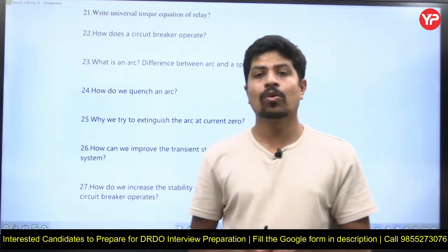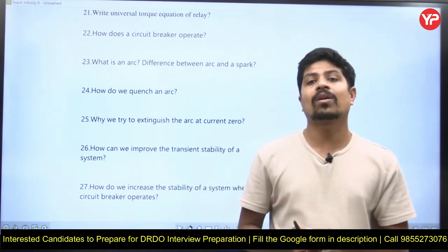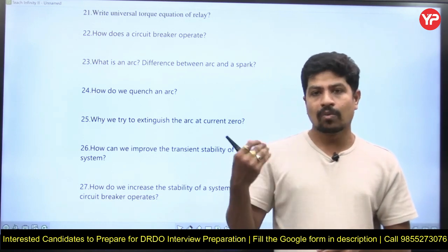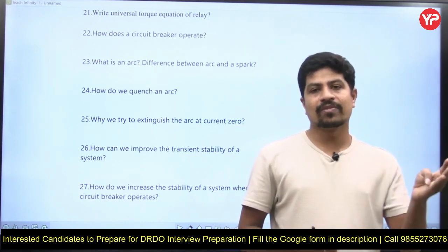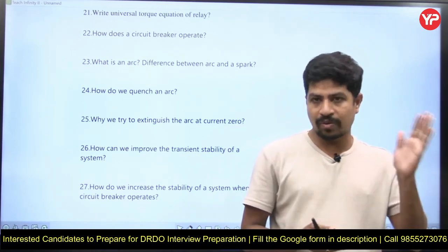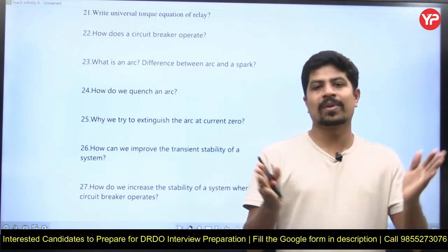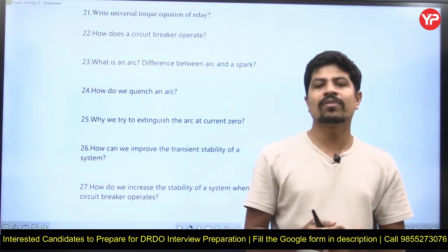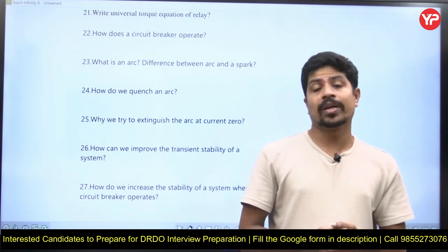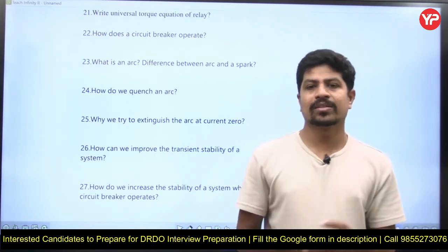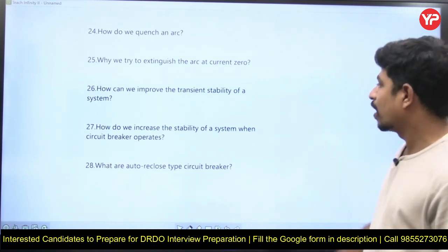How can we improve the transient stability of a system? Power system stability has two types: transient stability and steady state stability. To improve transient stability: resistance grounding helps, and operating the system at a load angle delta well below 90 degrees provides more stability margin. Other methods include using a flywheel and using fast-acting circuit breakers. How do we increase stability when a circuit breaker operates? By using fast operating circuit breakers.